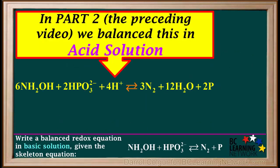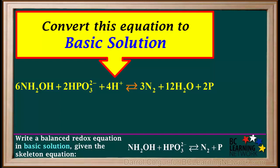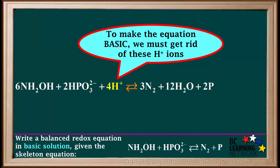Here is the equation we built in part 2, which is balanced in acid solution. Now we'll convert this equation to basic solution, like the original question asked us to do. In order to make this equation basic, we must get rid of these 4 H plus ions on the left side of the equation.